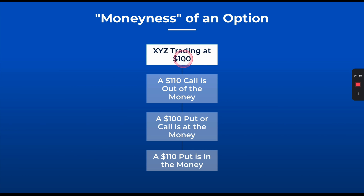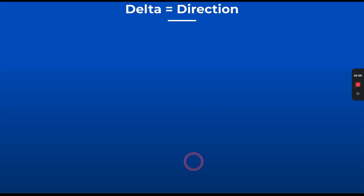Looking at a diagram: if XYZ stock is trading at $100 and I own a $110 call, it's out of the money — there's no value in exercising a $110 call if the stock is only at $100. At $100, whether I have a put or a call, it is at the money. If I have a $110 put and we're trading at $100, that put is $10 in the money. Now let's get into delta, since we understand the intrinsic and extrinsic piece of this.